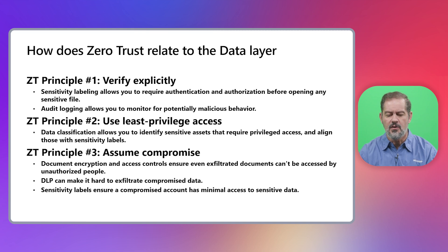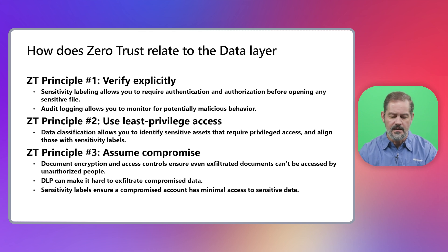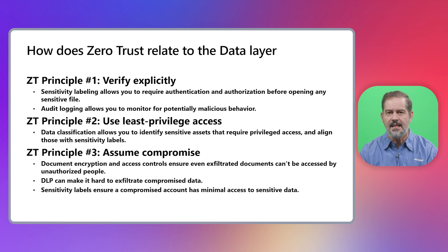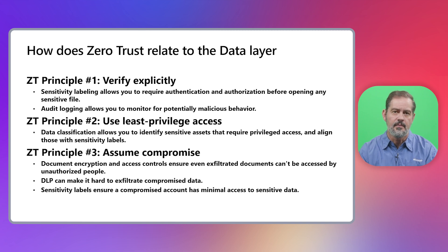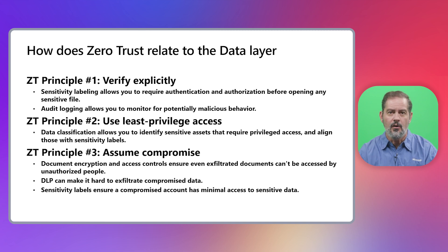The second principle in Zero Trust is to use least privilege access. When it comes to data, that means using data classification technologies to identify different types of sensitive data and to minimize the access levels of different users so people don't have standing access to information they don't need. You want to avoid creating an obscure organization where no one has access to what they need, but you want to ensure that particularly sensitive data can only be accessed by people who have a genuine requirement.